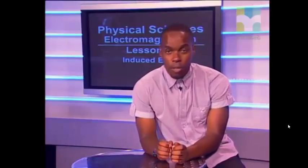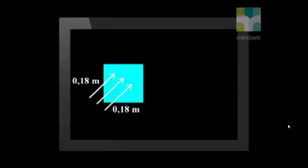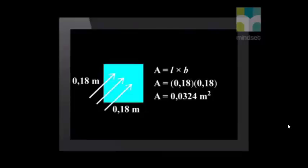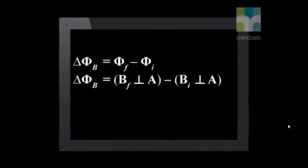First, we draw a picture of the situation. Then we calculate the change in the magnetic flux, and then we can answer the question. The square with size of 180 mm must be converted to 0.18 meters. The formula for the area of a square is length times breadth, so 0.18 meters multiplied by 0.18 meters is equal to an area of 0.0324 square meters. Do not round this value off because it is not the final answer. Now we calculate the change in the magnetic flux.